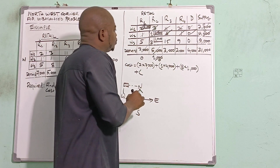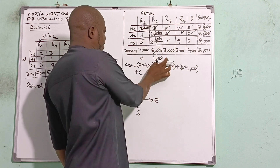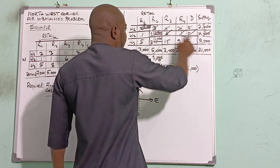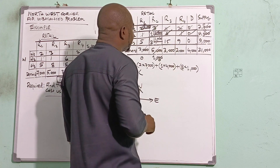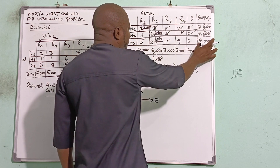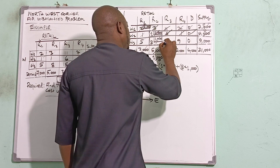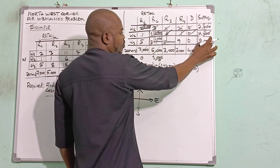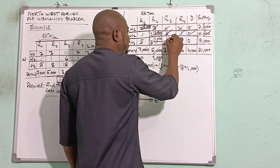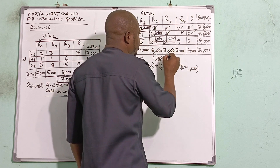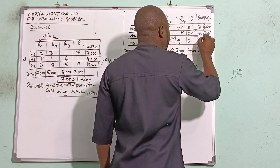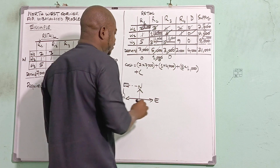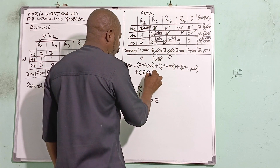The next Northwest Corner is the cell with cost 15, for Retail 3 with a demand of 3,000. I have 9,000 available in W3, so I bring 3,000 to meet that demand. Retail 3 is now exhausted and cancelled. W3 has 6,000 remaining. I record 15 × 3,000.